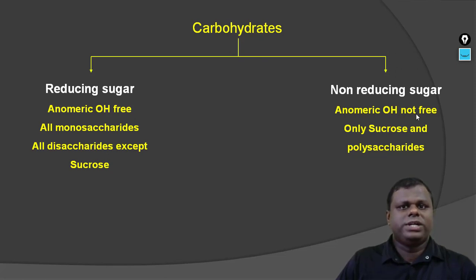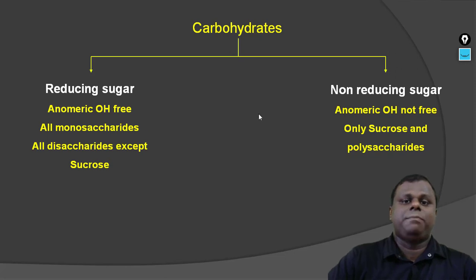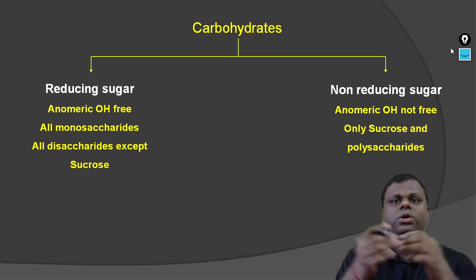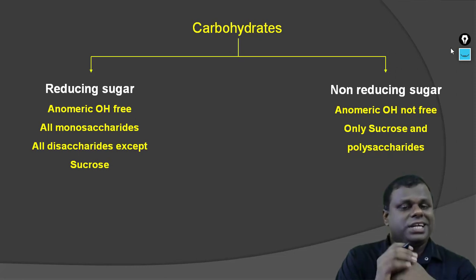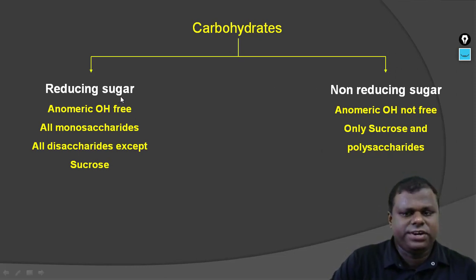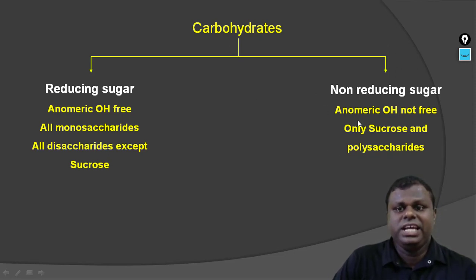For non-reducing sugar, the anomeric OH is not free. Only sucrose and polysaccharides are non-reducing. The anomeric OH — if it is free, the sugar is reducing; if it is not free or if it is joined, it is non-reducing.